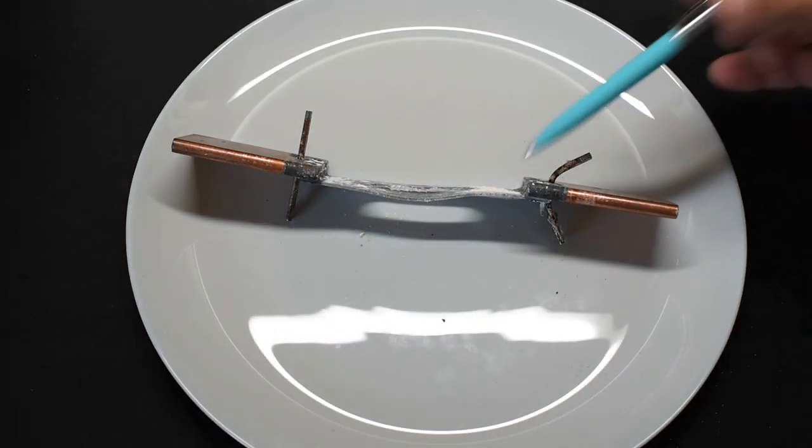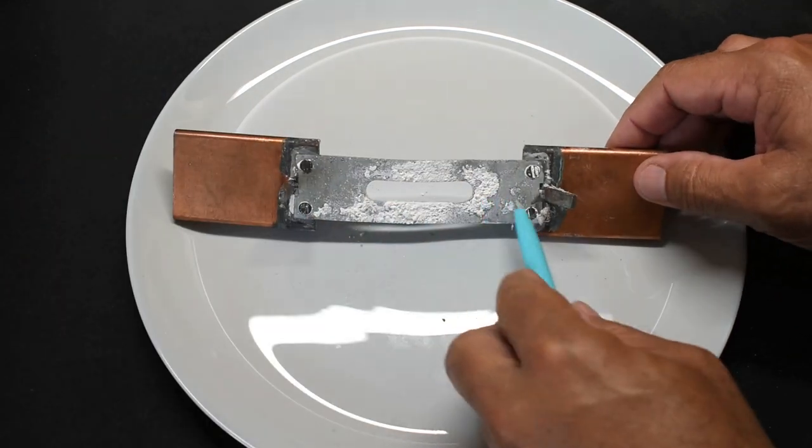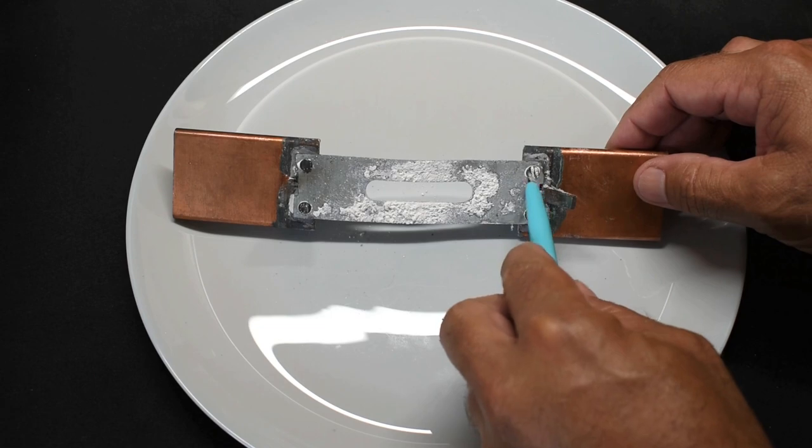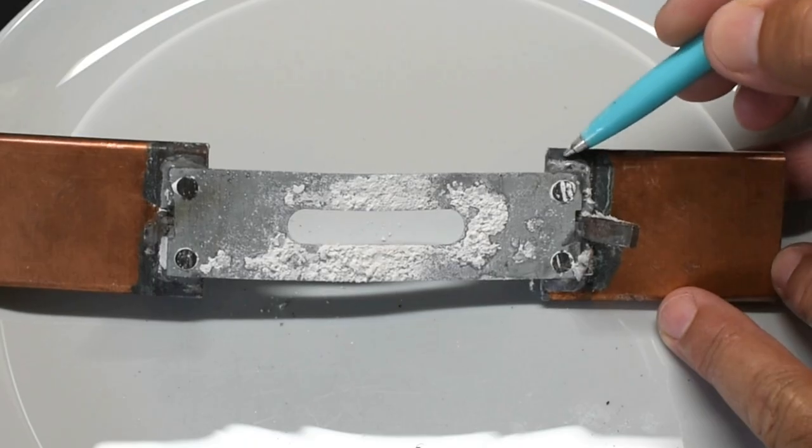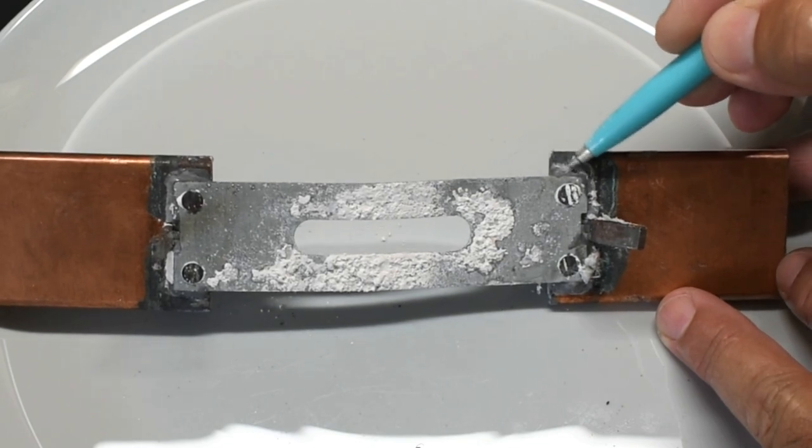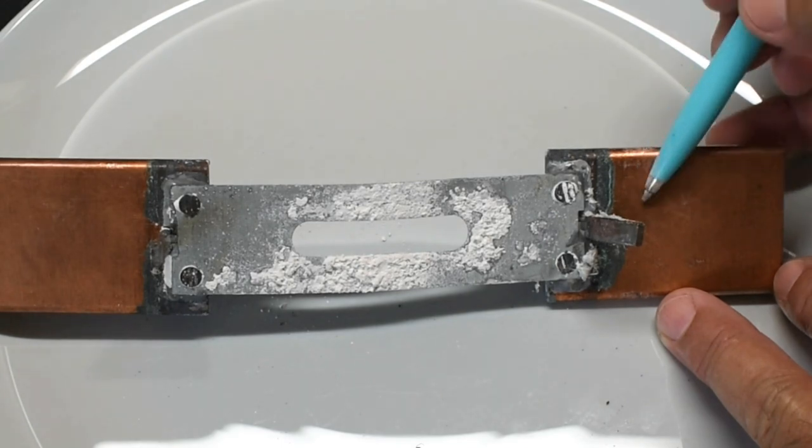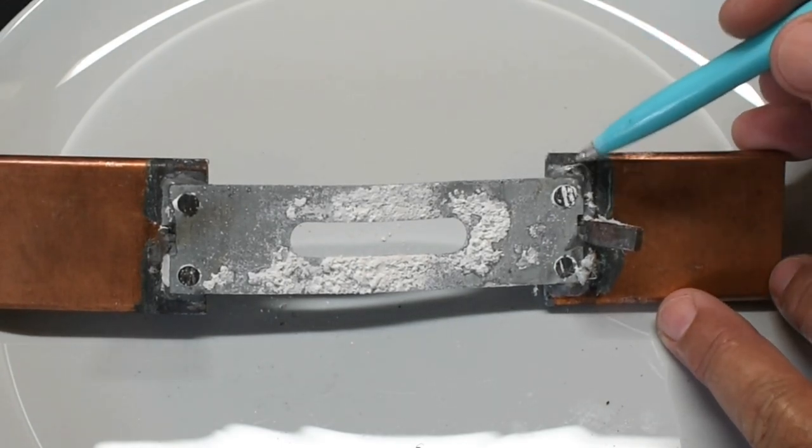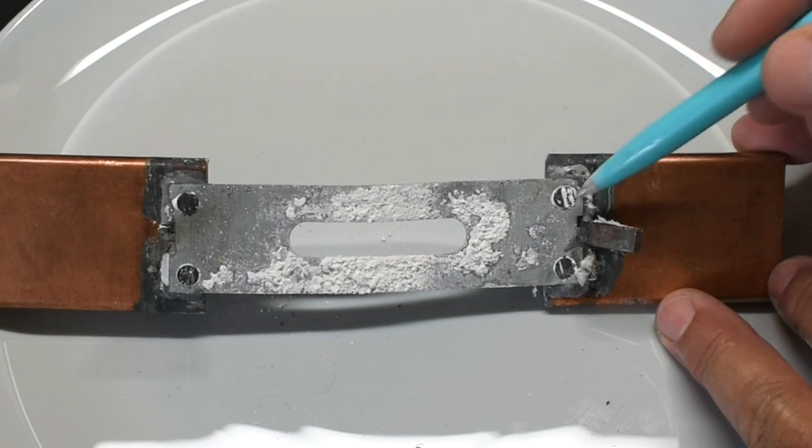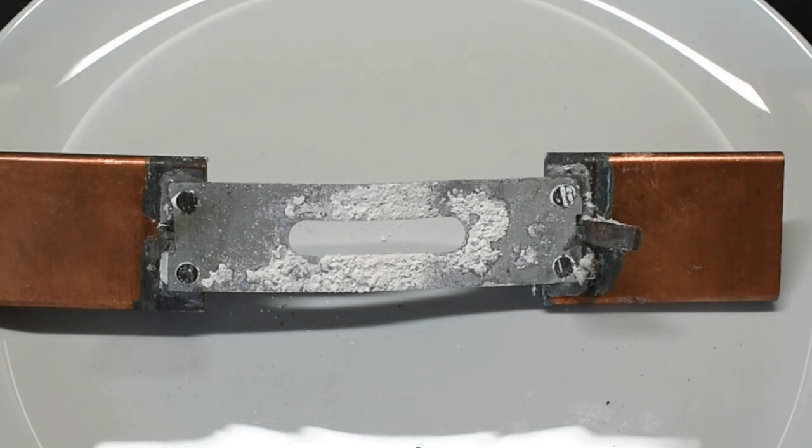Now it looks like over here, where the fusible section that's going to melt. This was riveted and possibly brazed. Yeah it looks like it. So they riveted this section to the thick copper, and then they brazed it as well. So there's very little chance of having a heat build up at the connection point. It's all going to be in this area right here.